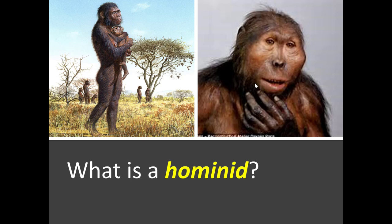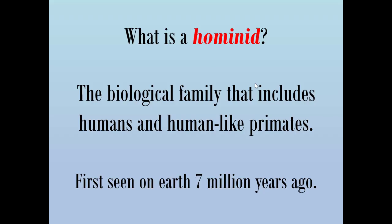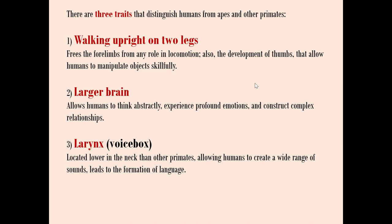Next is hominid — the biological family that includes humans and human-like primates. This species was first seen on Earth 7 million years ago. There are three traits that distinguish humans from apes and other primates. Number one: walking upright on two legs — bipedalism — which frees the four limbs from any role in locomotion. Number two: the development of thumbs, which allow humans to manipulate objects skillfully.